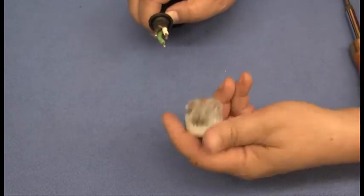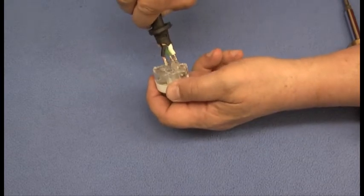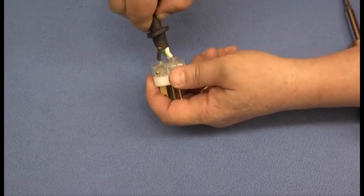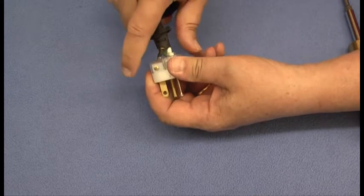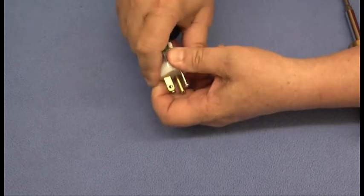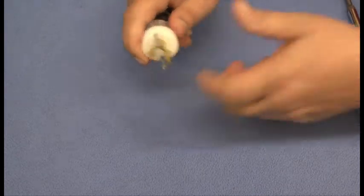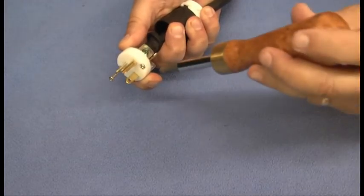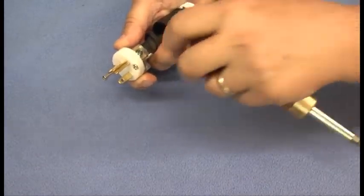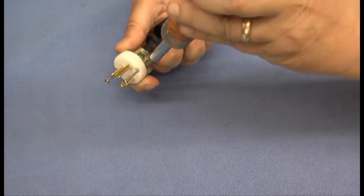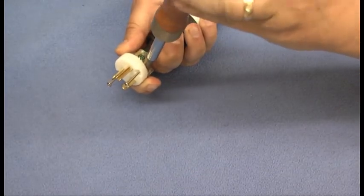The neutral is down. There we go. We'll push those in and hold them securely in place. Turn it over, and then with a screwdriver we'll secure the screws to hold the wires in place.